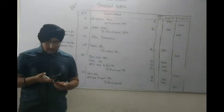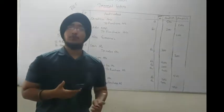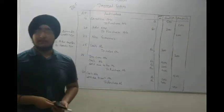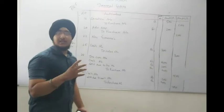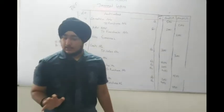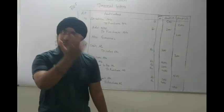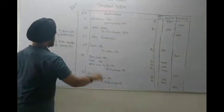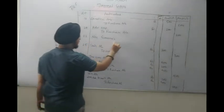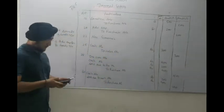Next transaction: Goods of Rs.400 received as a free sample. No money was paid and no money is to be paid in future — so this is a non-economic transaction. No journal entry is recorded.